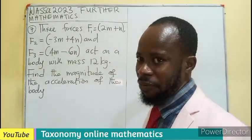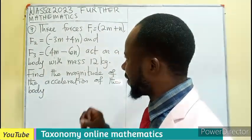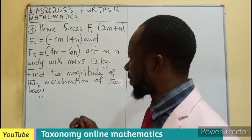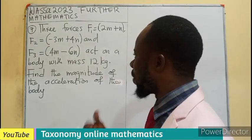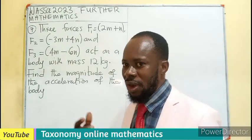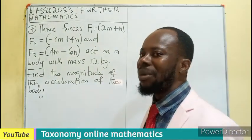So 3 forces: force 1, that is 2m plus n, force 2, minus 3m plus n, and force 3 is 4m minus 6n, act on a body with mass 12 kilograms. We have to find the magnitude of the acceleration of the body.